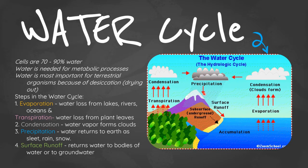When water returns to earth and flows over mountains and land, we get surface runoff — the return of water to bodies of water or to groundwater. Another important process is transpiration, another way in which water returns to the air, and this occurs in plant leaves.